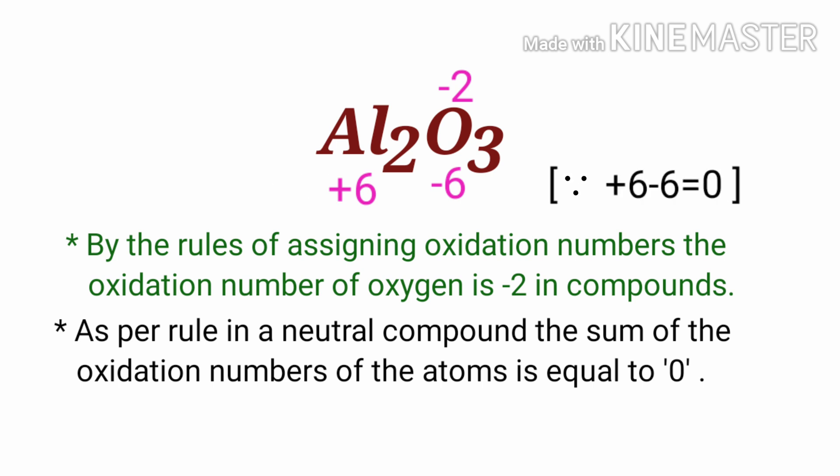In the Al2 element, there are 2 aluminium atoms present. So we can write the oxidation number of aluminium is +3.